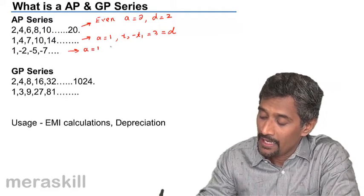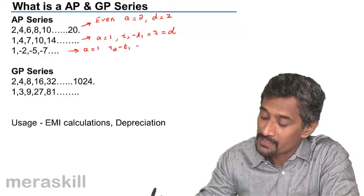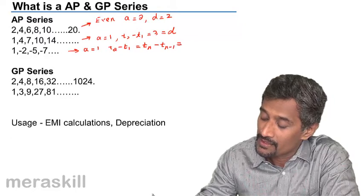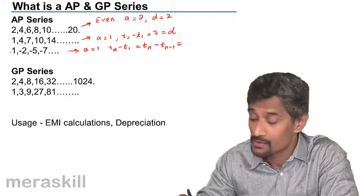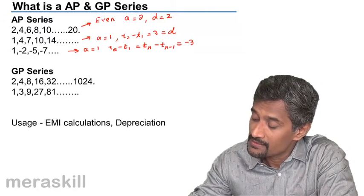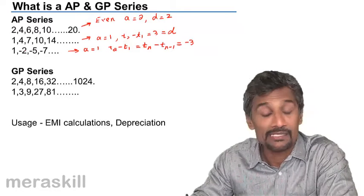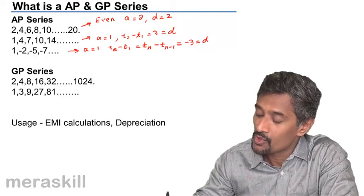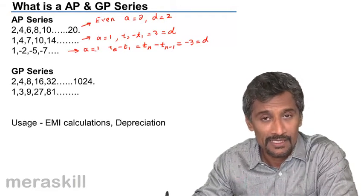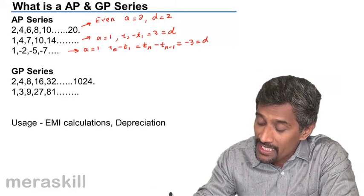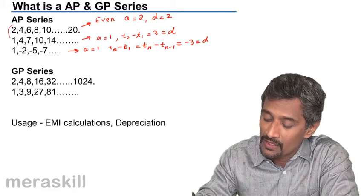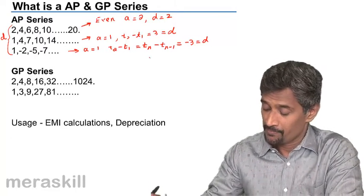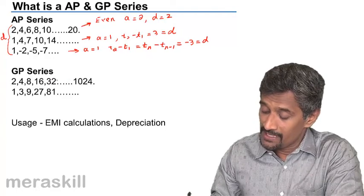Here, a is 1 and t2 minus t1, or more specifically every tn minus tn minus 1, is negative 2 minus 1, which is negative 3. Similarly, negative 5 minus negative 2 is negative 3. This is defined with 1 as the first term and the common difference is negative 3. We observe that a common difference exists between consecutive terms.